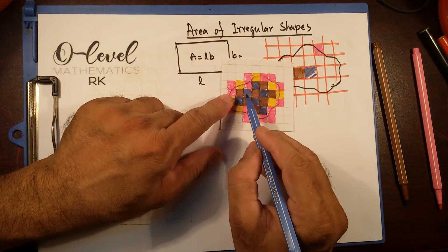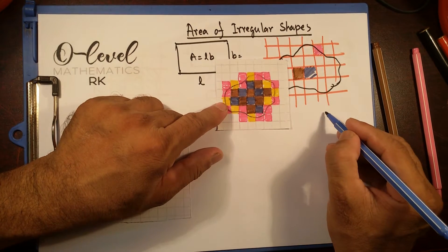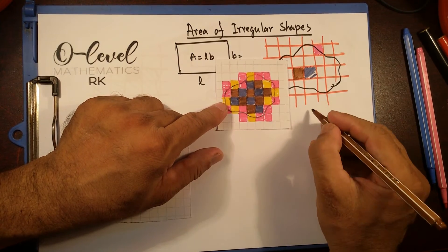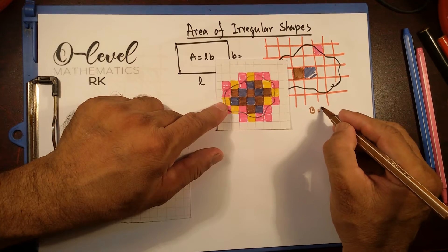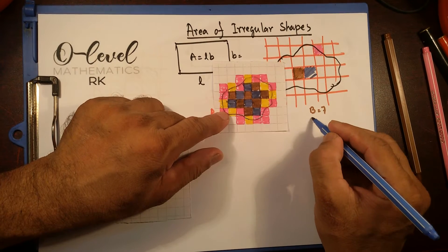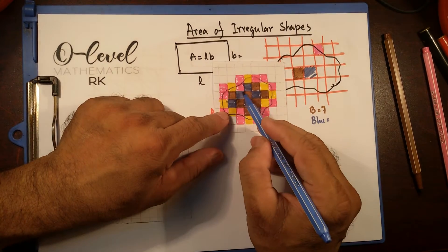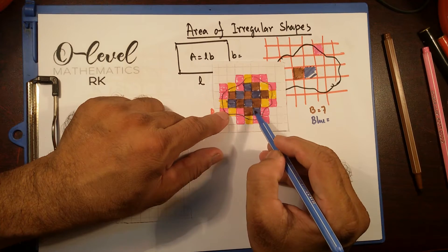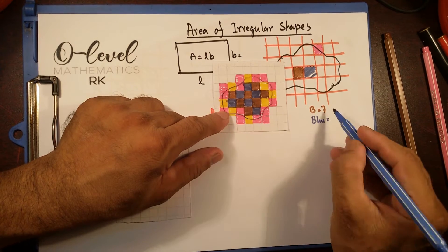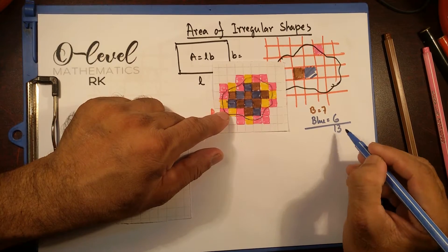Look at this. All the brown, there are 1, 2, 3, 4, 5, 6, 7 brown squares that completely fill this space. And then blue, 1, 2, 3, 4, 5, 6. So total 7 plus 6 is 13 complete squares.